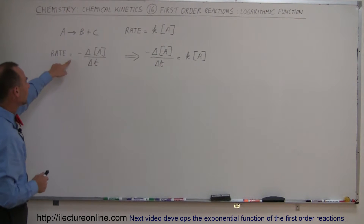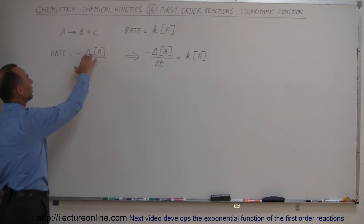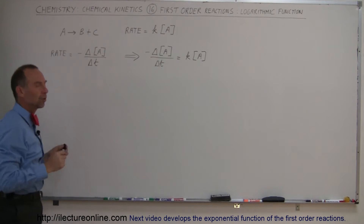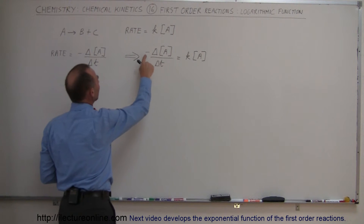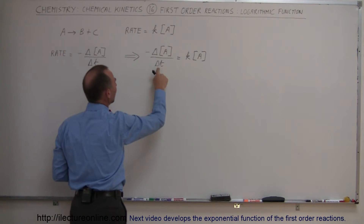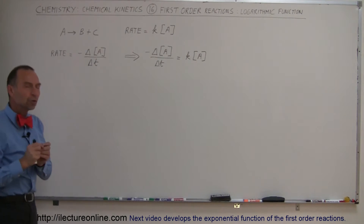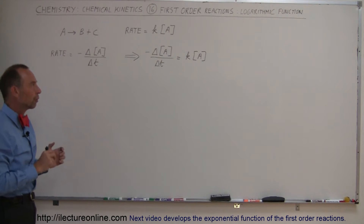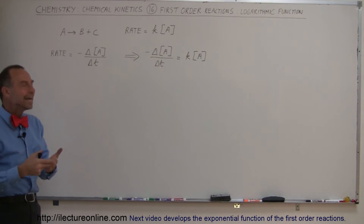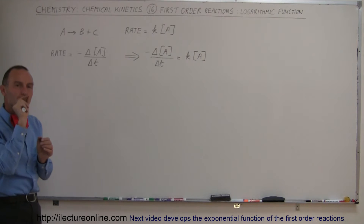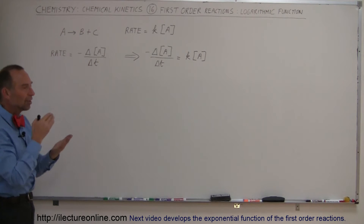We can also write the rate as the negative change of the concentration of A with respect to time — that is, the difference in concentration of A divided by the difference in time. Setting these two expressions equal gives us: negative change in [A] divided by change in time equals K times [A]. We'll now write this in differential form using dA/dt — an infinitely small change — which allows us to find the exact relationship between concentration, time, and K.